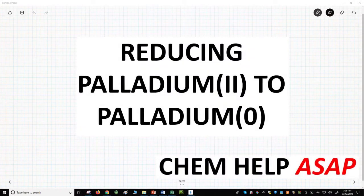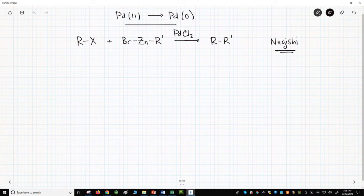Hello from Chem Help ASAP. Let's see how the palladium catalyst is initially activated for the catalytic cycle. All the coupling reactions we've seen in this playlist require palladium to be in the zero oxidation state, but we always use palladium 2 salt, PdCl2 over the arrow. How does this work?